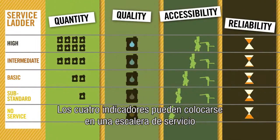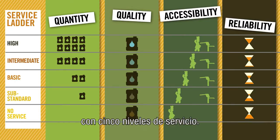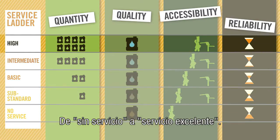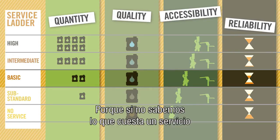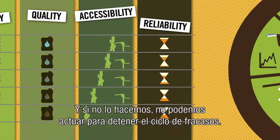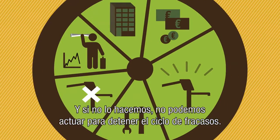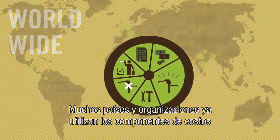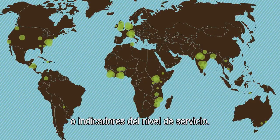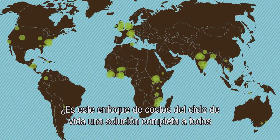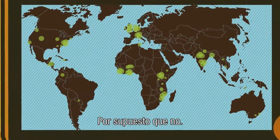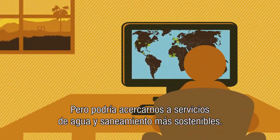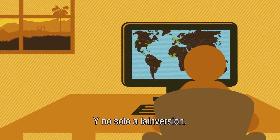The four indicators can be placed in a service ladder with five levels of service, from no service to high service. Basic service corresponds with the norm of the country. Because if we don't know what a service costs, we can't budget. And if we don't budget, we can't act to stop the cycle of failure. Many organisations and countries already use the cost components or service level indicators. So, is this life cycle costs approach a complete solution for all challenges in the water sector? Of course it isn't. But it could bring us closer to water and sanitation services that last, and not just a one-time investment.